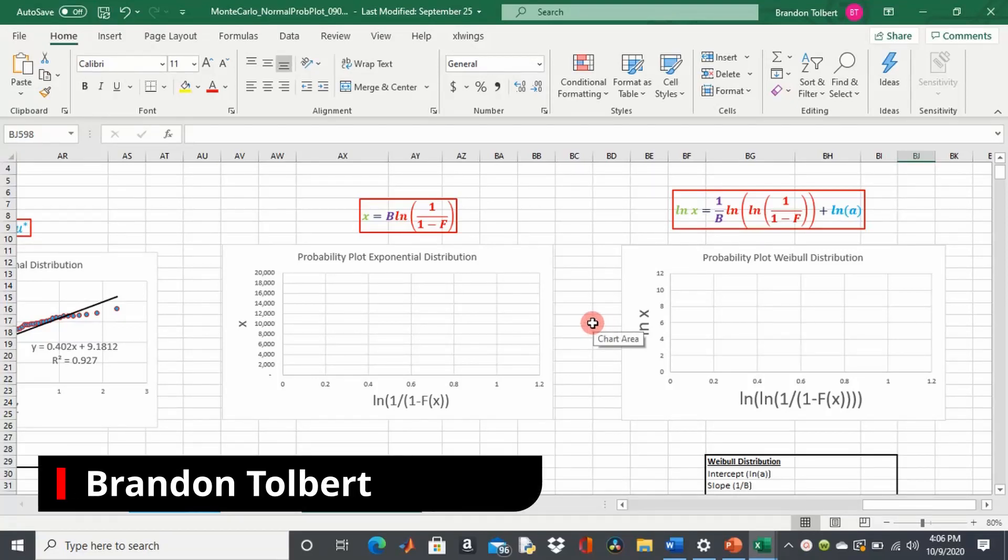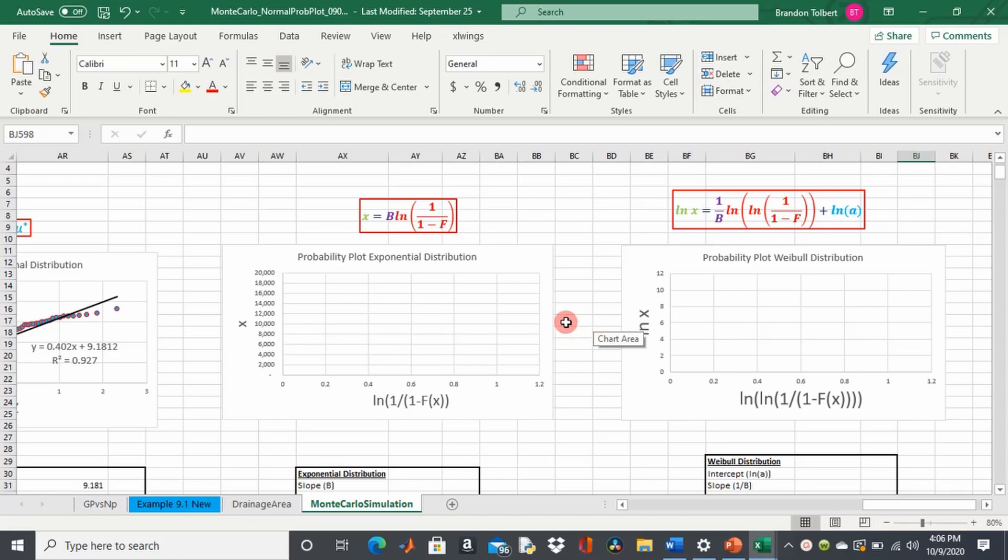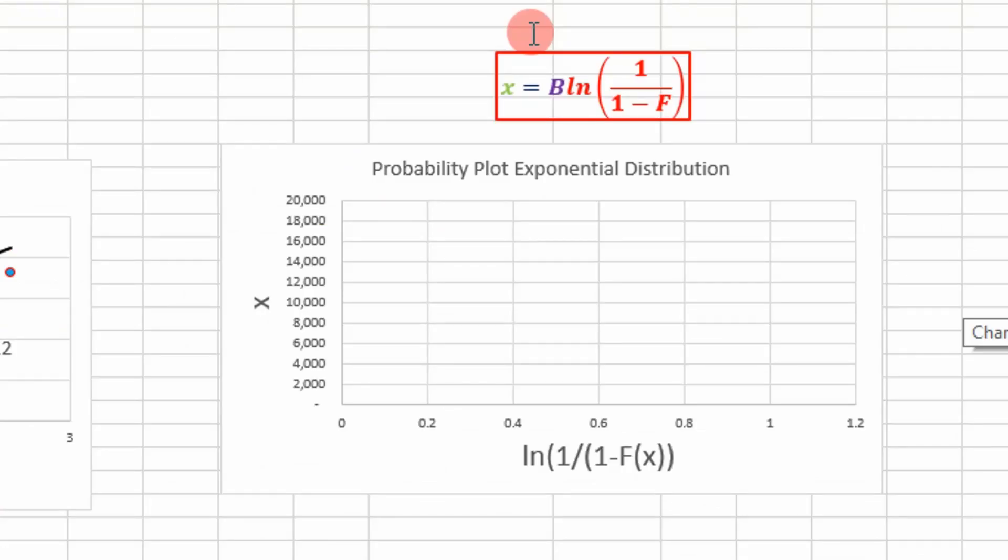In today's video we're going to look at modeling our data with the best fit exponential distribution. If you recall, we came up with this equation for the exponential distribution. It's the equation of a straight line with a slope of b and an intercept of zero.